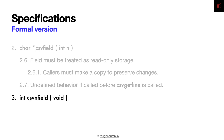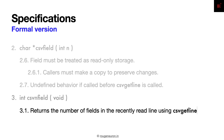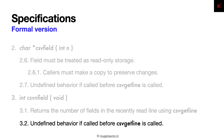Let's look at the csvn_field function. This function will return the number of fields in the recently read line using csv_get_line. Like csv_field, csvn_field will also have undefined behavior if it gets called before csv_get_line is called.